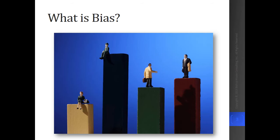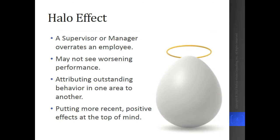So first, let's take a look at some different biases. First, there's the halo effect, and this is when a supervisor or manager overrates an employee. It may be times when it's perceived that the employee can do no wrong — any mistakes may be minimized, blamed on someone else, or even just swept under the rug. The halo effect can occur because of an individual relationship or some preference that the manager has for that employee.